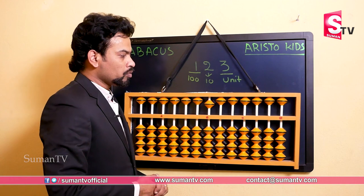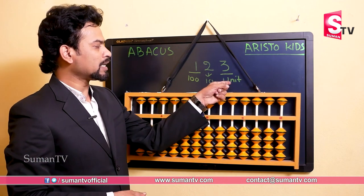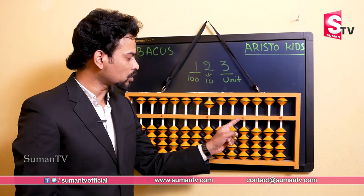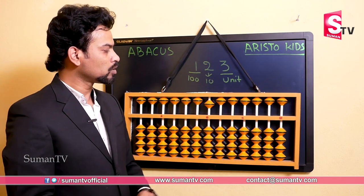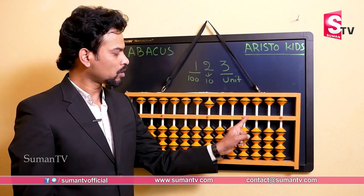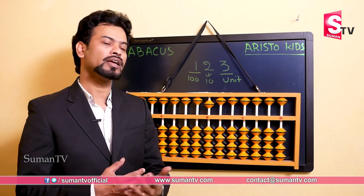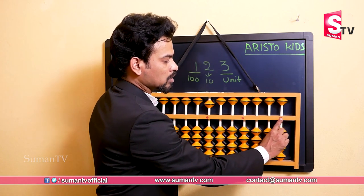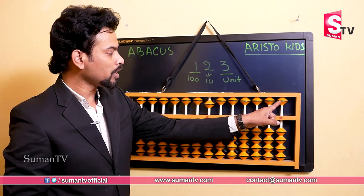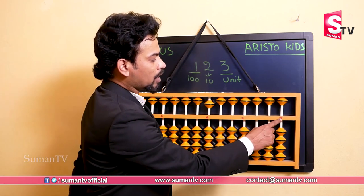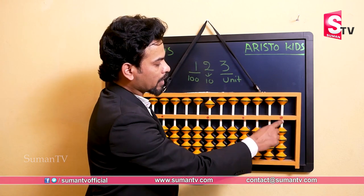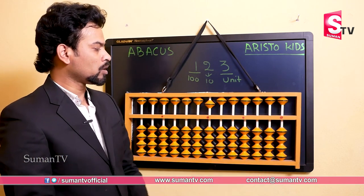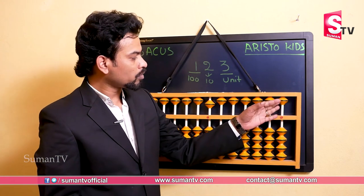In abacus also we will start from a particular point called the unit point, which is wherever the unit dots are. We have four unit dots here, so we can take any of these lines as the unit according to our need — we can change the unit place. For our convenience, I am taking the first place where a unit dot is as the unit place. When I take this unit dot as the unit, this particular rod becomes the unit rod.